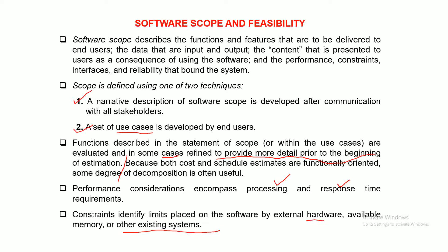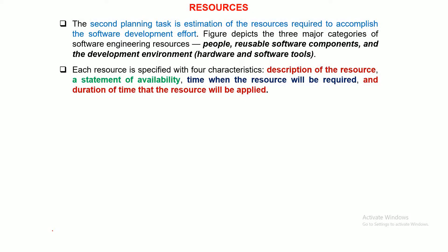Resources play a very important role in software project planning. The second planning task is estimation of the resources required to accomplish the software development effort — the first one was identifying the scope and feasibility. A figure depicts the three major categories of software engineering resources.